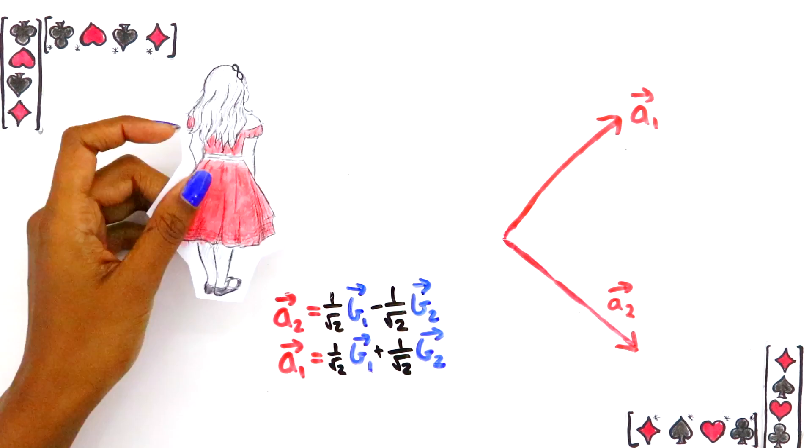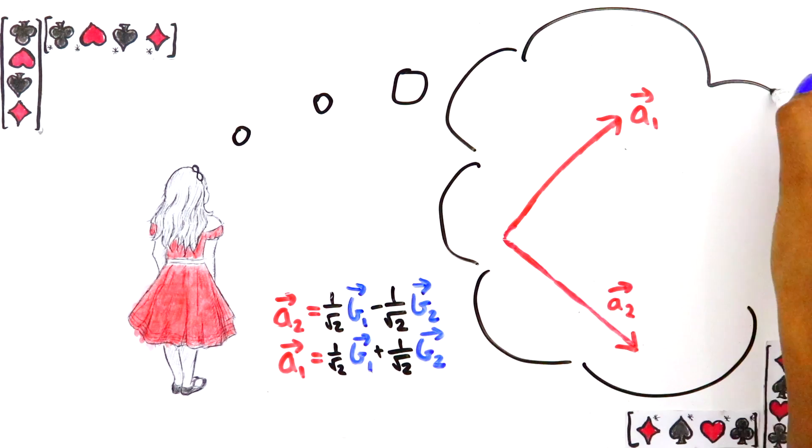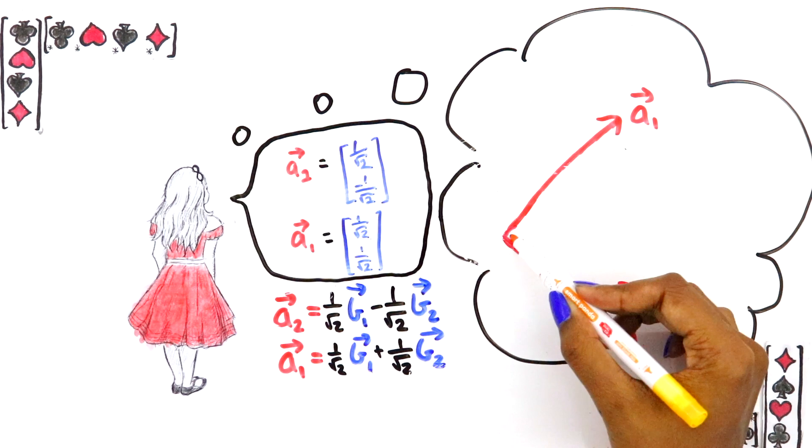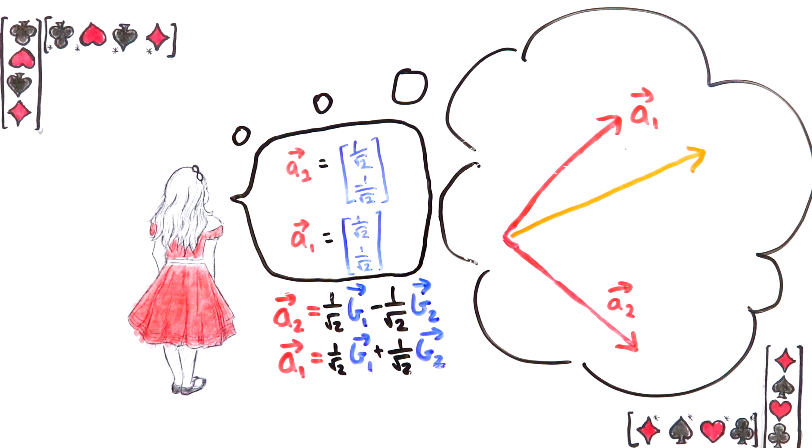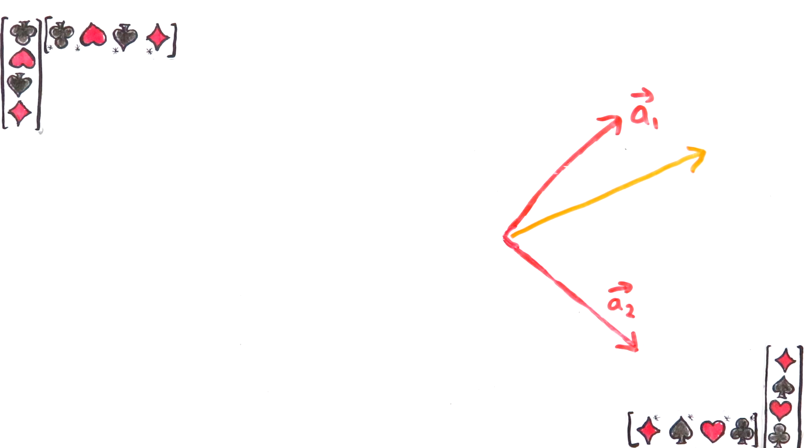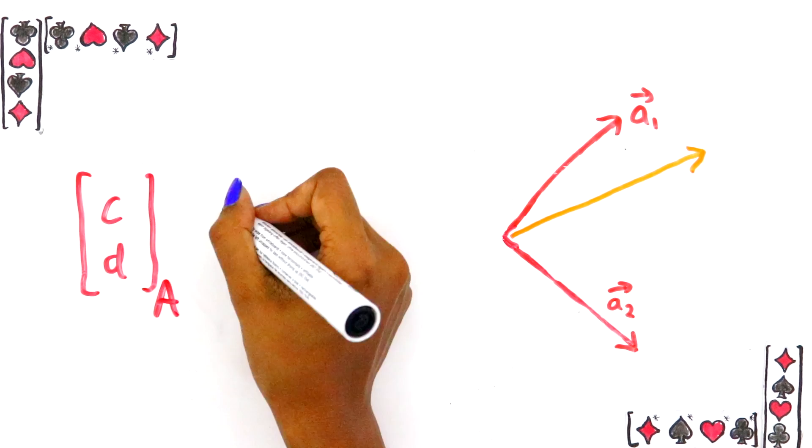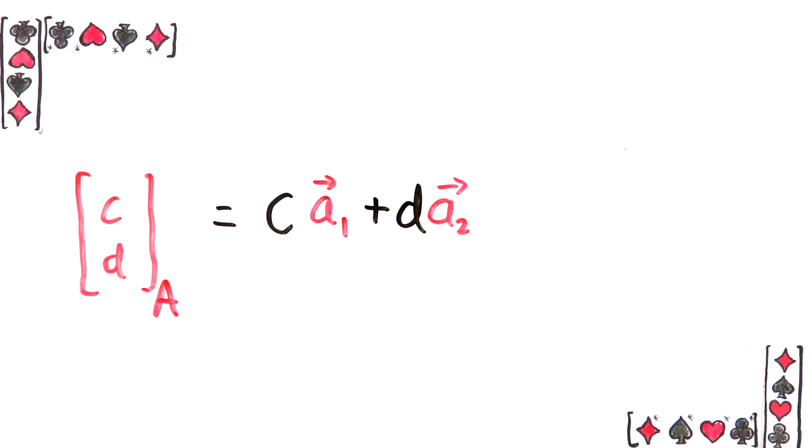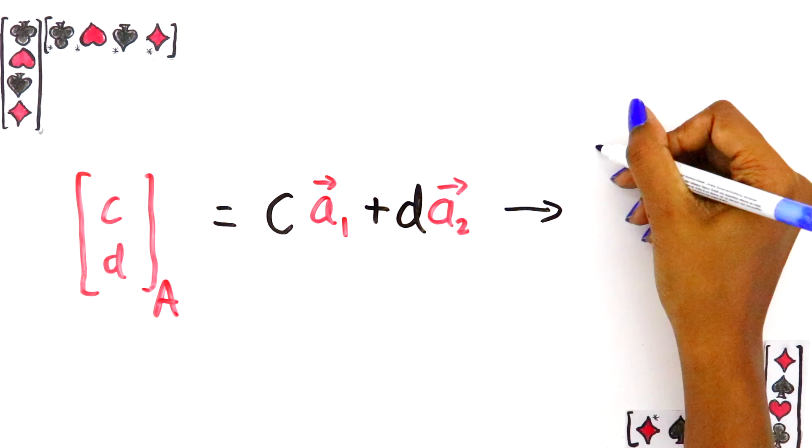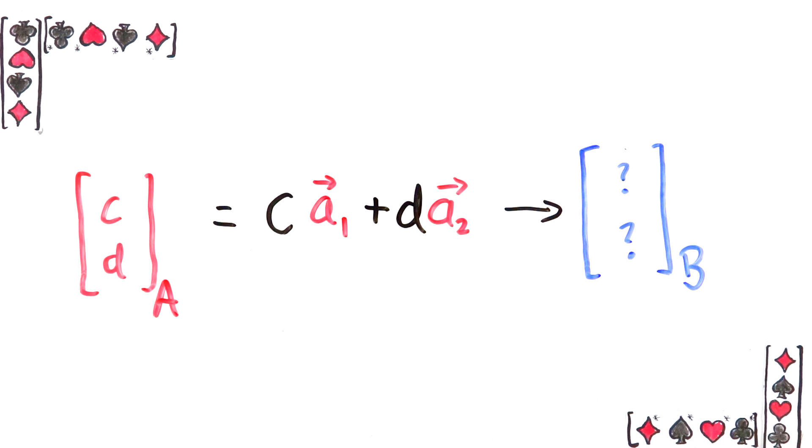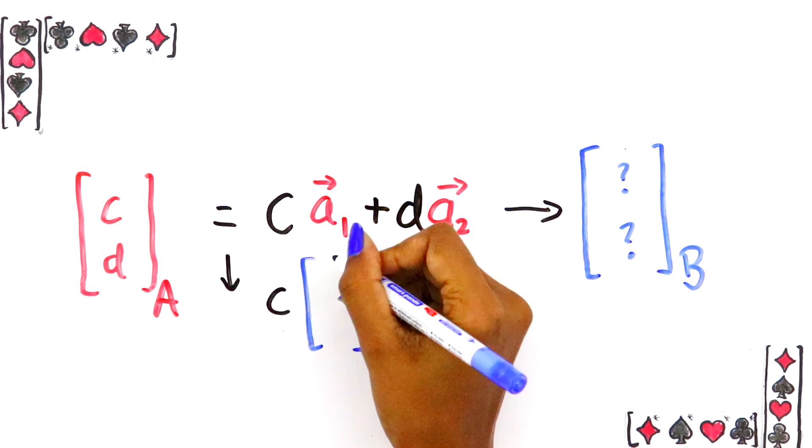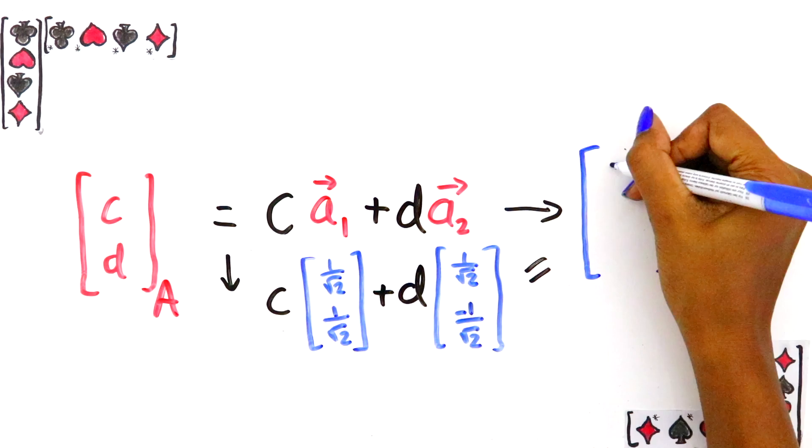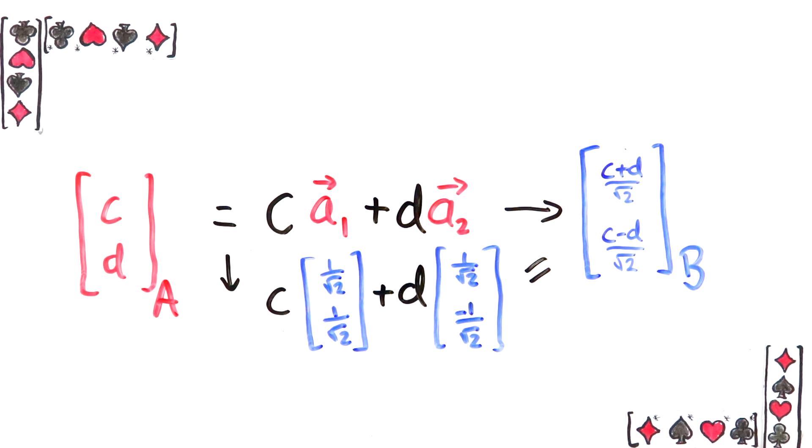Okay, so Alice now knows how to write these two basis vectors in Bob's language. But what if she wants to send some other vector? Well now she basically can. Why? Imagine she writes her vector as this column of numbers. That means the vector is this linear combination of her basis vectors. She needs to translate this whole thing to Bob's basis. But she already knows how to translate her own basis vectors, and after doing that she's done, right? Because the resulting column is in Bob's basis now.